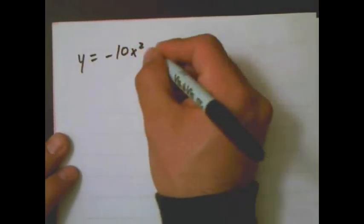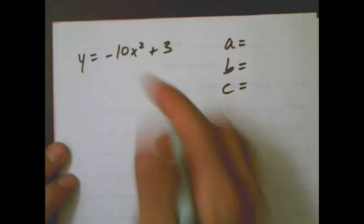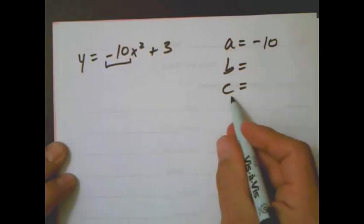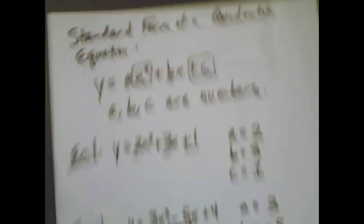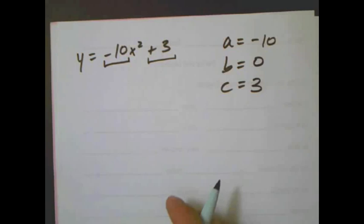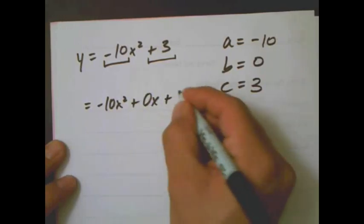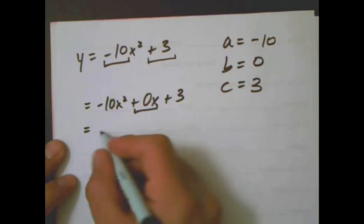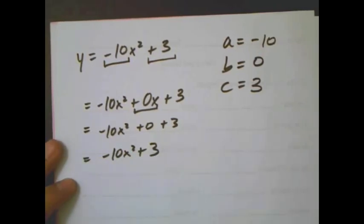Let's see another one. A little bit trickier. a is the number that goes with x squared. Negative 10. c is the number that is by itself. No variable. 3. And, as we know, b is the number that goes with x. And, if there's no x, that means b has to be 0. Because, what we really have here is negative 10x squared plus 0x plus 3. And then 0 times x equals 0. There it is.